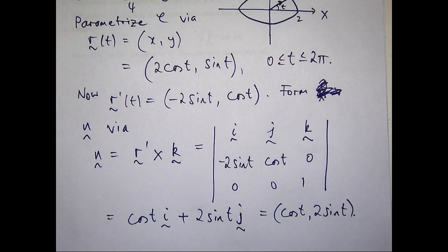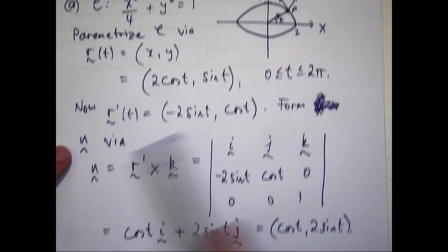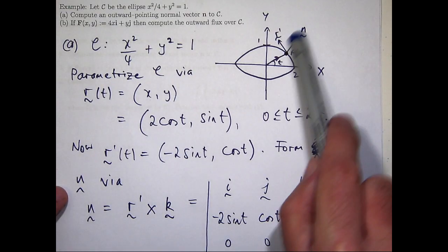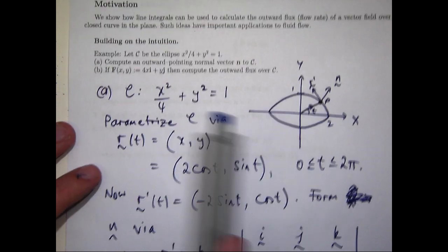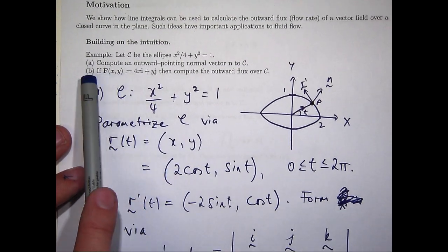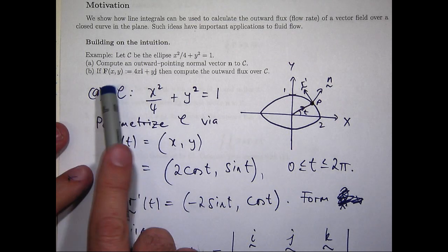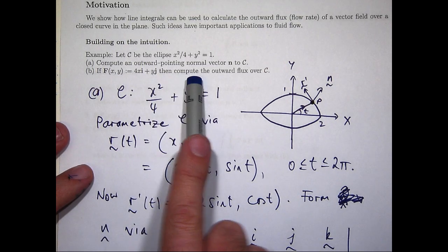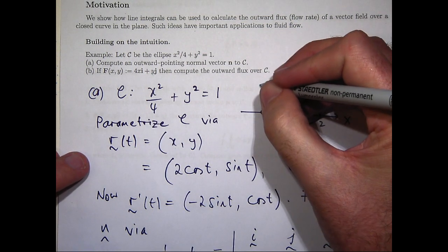Okay, so this then, or this, however way you want to write it, is my outward pointing normal vector. Now why is that important? Well, it can be important in part B depending on how you want to calculate these things. So in part B, I'm given a vector field and I'm asked to compute the outward flux over my ellipse.